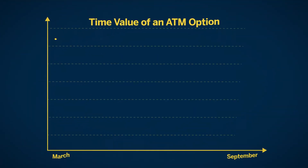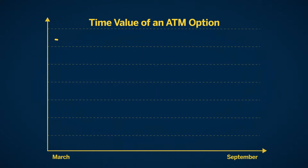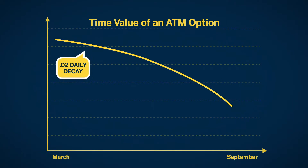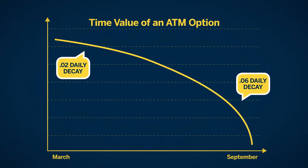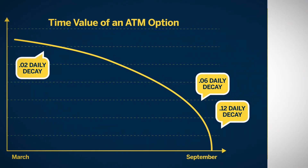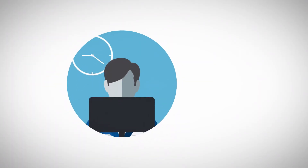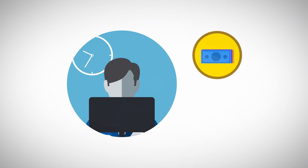In reality, the theta loss increases as the option approaches expiration. For example, in March, a September option will have a daily time decay of 0.02. By August, the daily decay will increase to 0.06 and the option decays more quickly. Theta is greatest for at-the-money options.